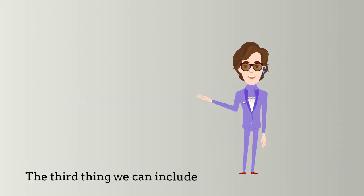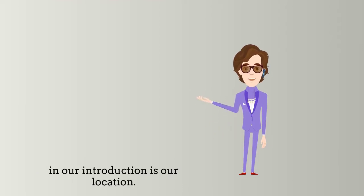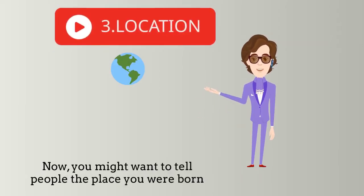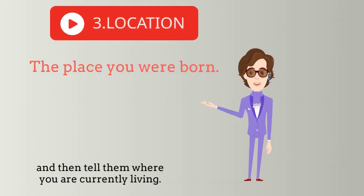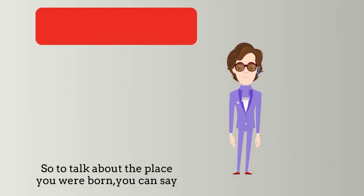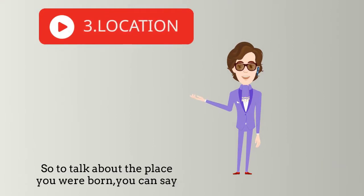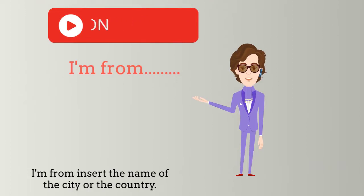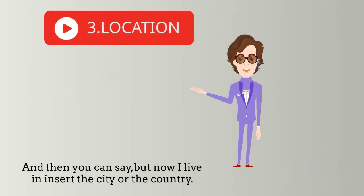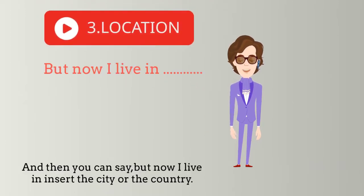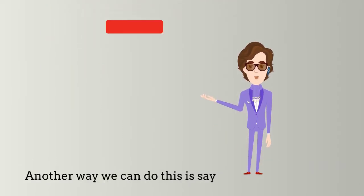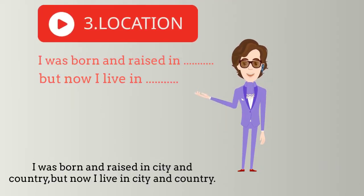The third thing we can include in our introduction is our location. You might want to tell people the place you were born and then where you are currently living. To talk about the place you were born, you can say 'I'm from [city or country]', and then 'but now I live in [city or country]'. Another way is to say 'I was born and raised in [city and country], but now I live in [city and country]'.